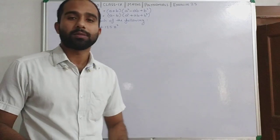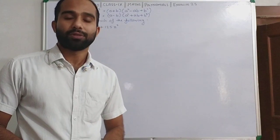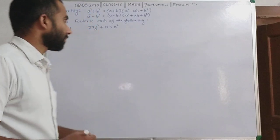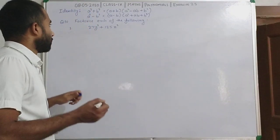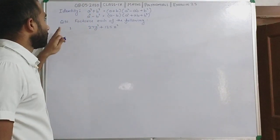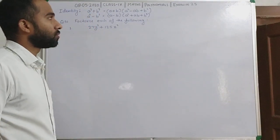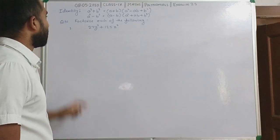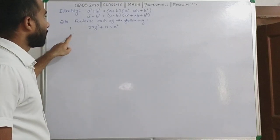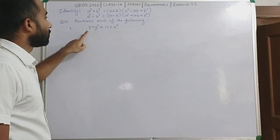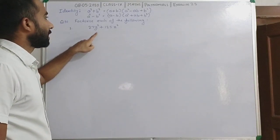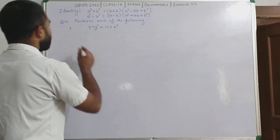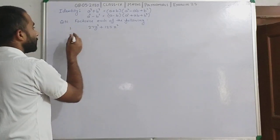So we will try to solve these questions. This is question number 10 of exercise 2.5. The first part is 27y cube plus 125z cube. So we will solve this.